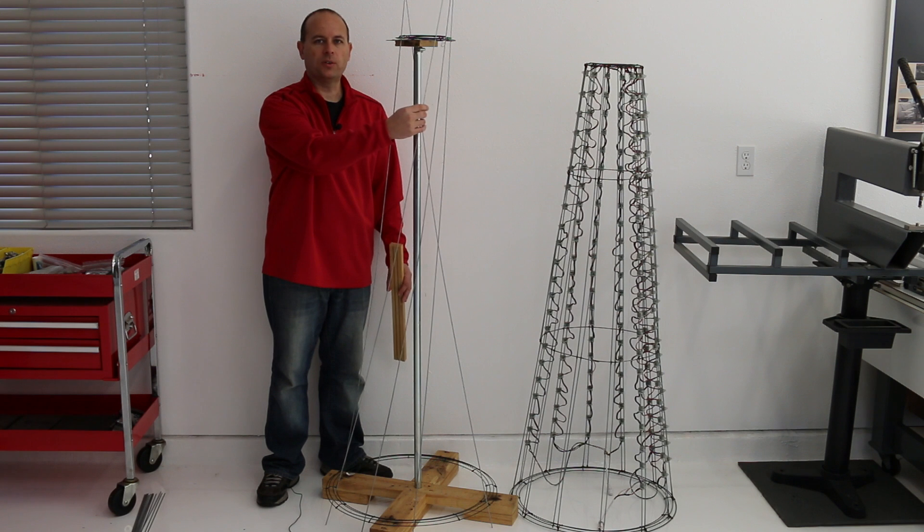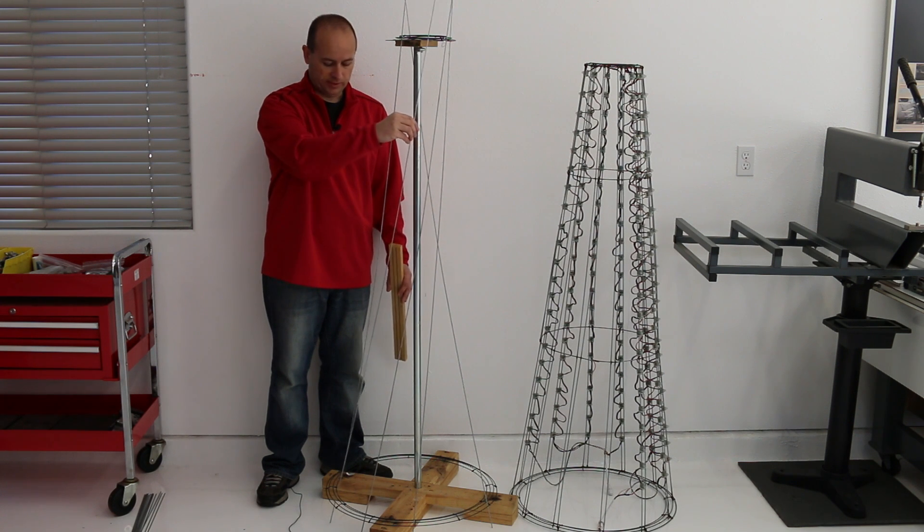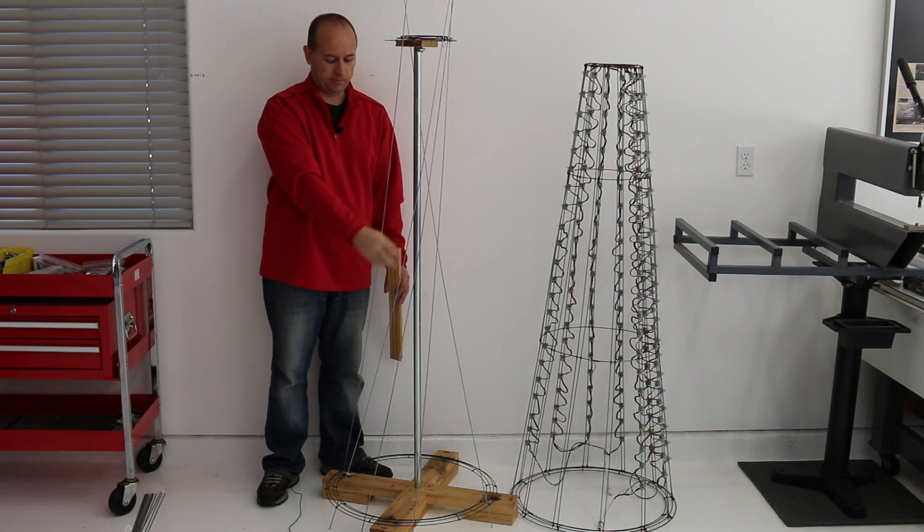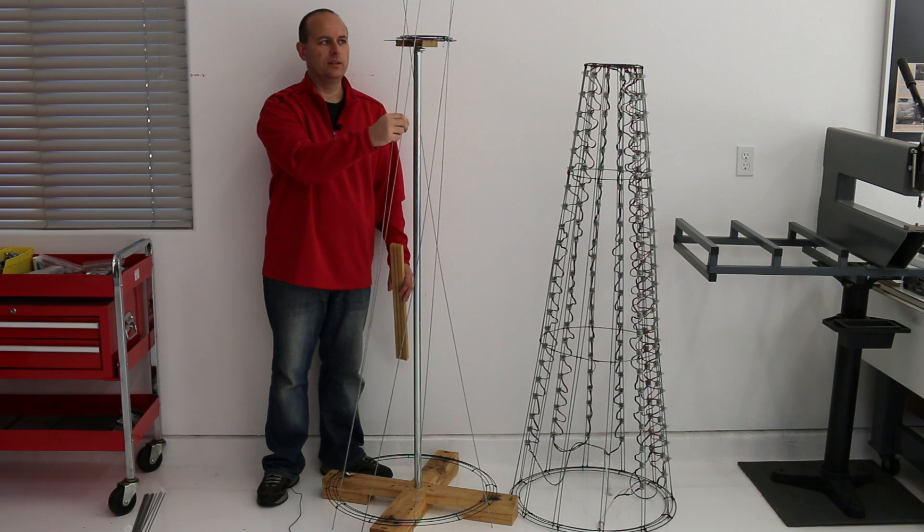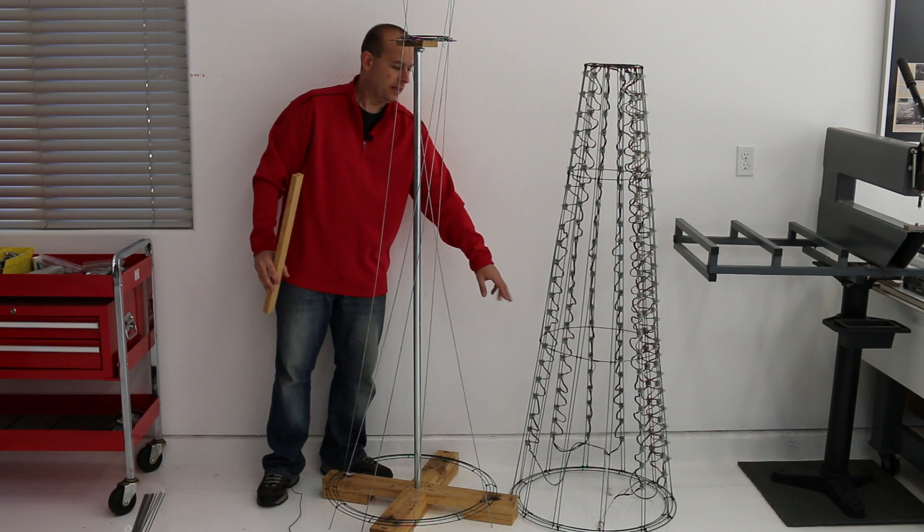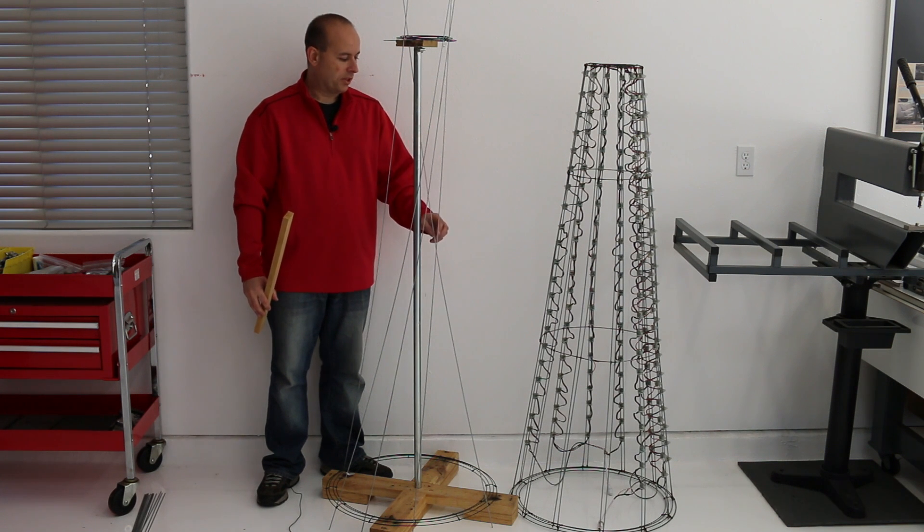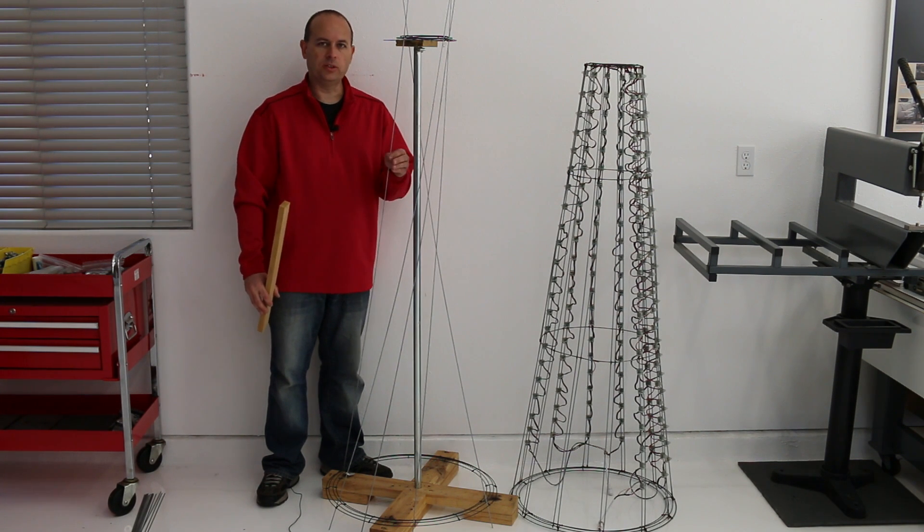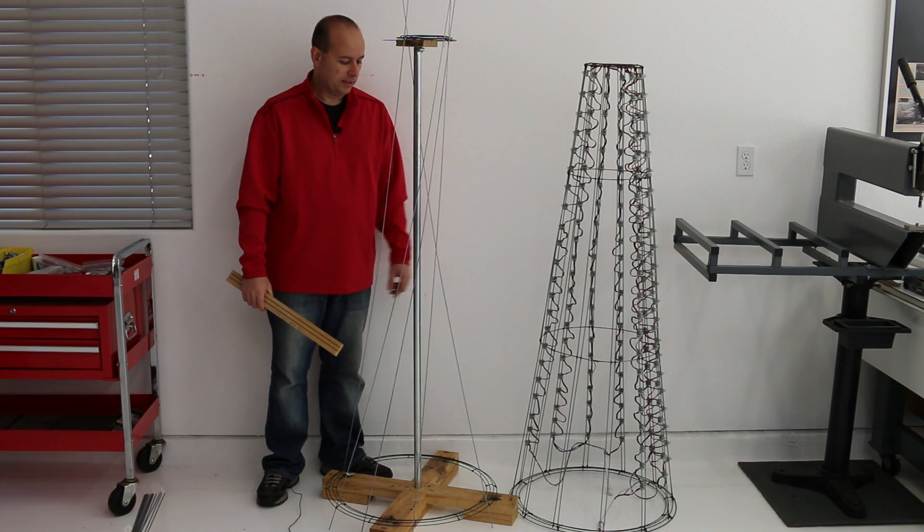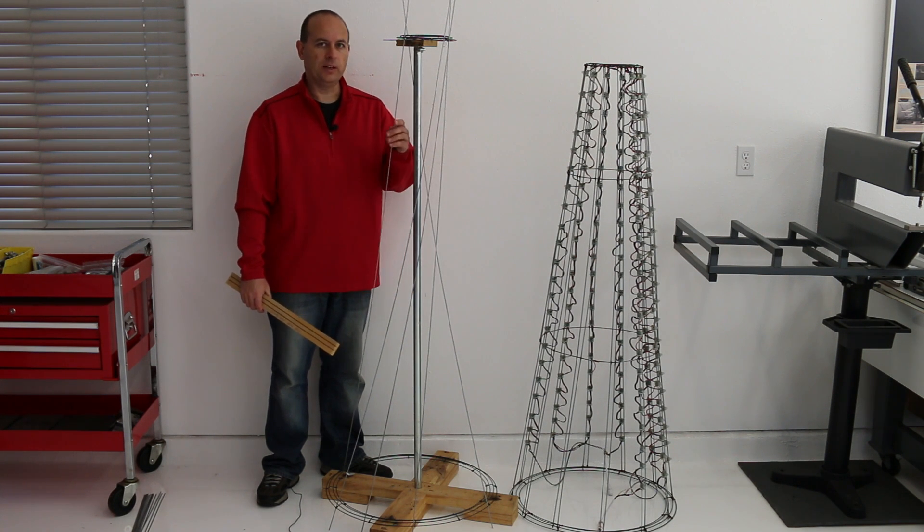Once I have the vertical rods in place, I will then secure them by tack welding them with my Lincoln MIG welder at both the top and the bottom. This will keep them in perfect alignment vertically while I put the rings, which you see in the middle here, in place. Those rings are actually just these rods bent in a 360 degree circle to hold it and give it a little bit more stability and a little bit more rigidity.